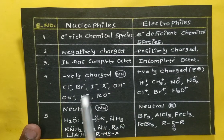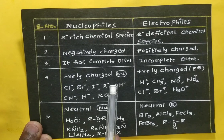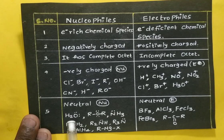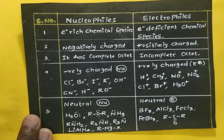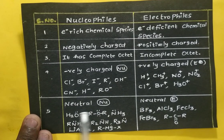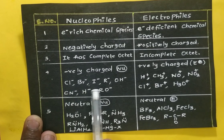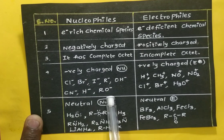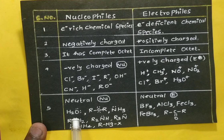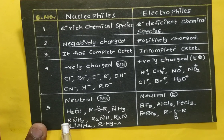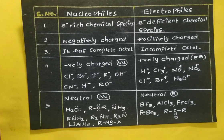Nucleophiles can be classified into two types: negatively charged nucleophiles and neutral nucleophiles. Negatively charged nucleophiles include Cl⁻, Br⁻, I⁻, R⁻, OH⁻, CN⁻, H⁻, and RO⁻, among others. Neutral nucleophiles include water, ethers (RO), ammonia, primary, secondary, and tertiary amines, lithium aluminum hydride, and Grignard reagents. Neutral nucleophiles have lone pairs of electrons they can donate to form a bond.